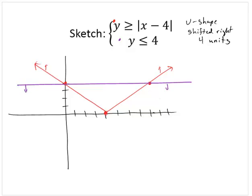So we need to be above what we've marked in red and below what we've marked in purple. And so we would shade the region enclosed by those two constraints.